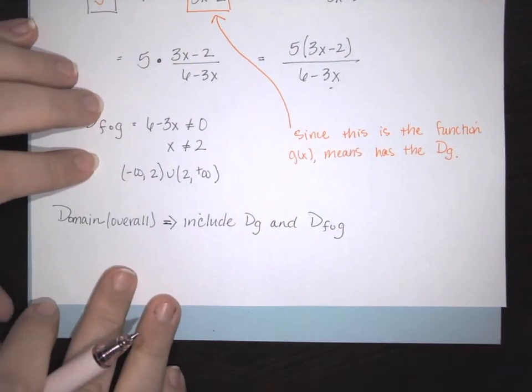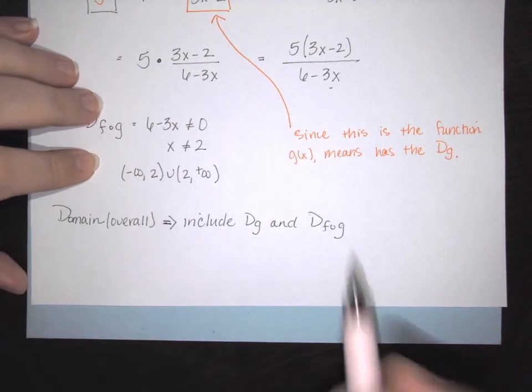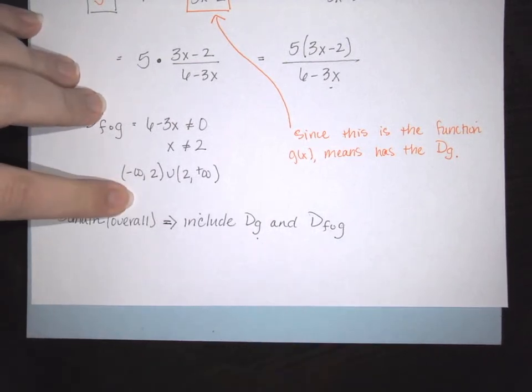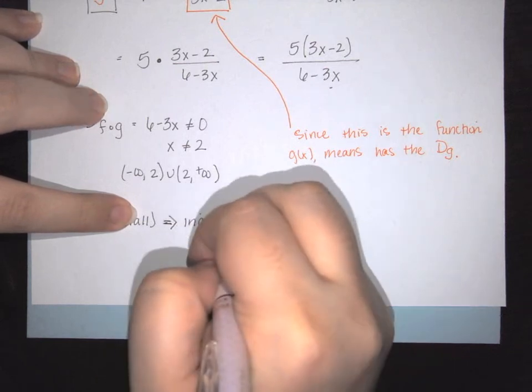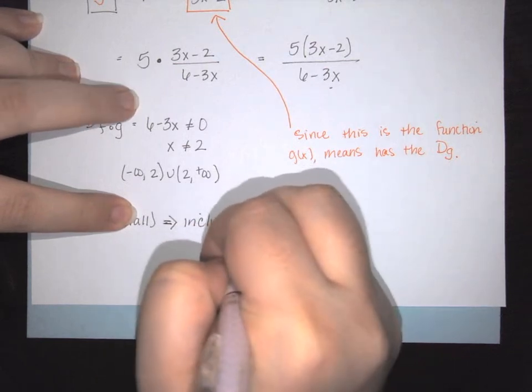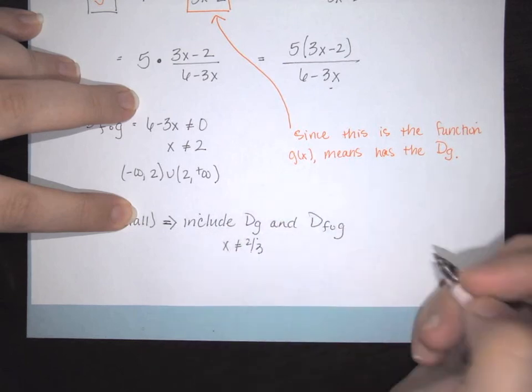has to incorporate, so this is going to include the domain of g and the domain of f of g. So that being the case, what we know is that the domain of g says that x cannot be 2 thirds, and we know f of g says that x cannot be 2.